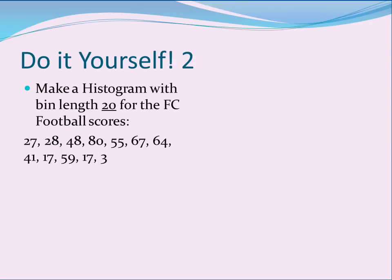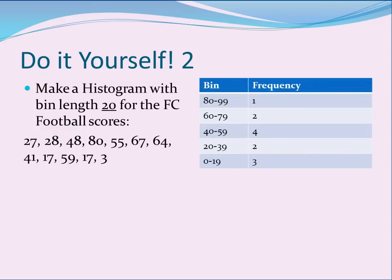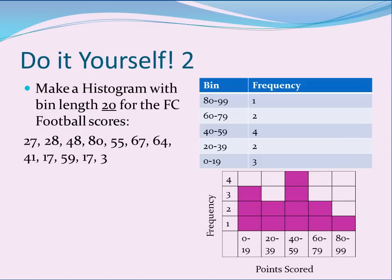Time to try another one on your own. Be careful this time — the bin length of 20 means that this will look a little bit different than your stem and leaf plot. Go ahead and see what you can do with this question. Pause the video now and restart it when you're ready to continue. Ready to see the results? The first thing you should have done was make a frequency table. Since we wanted a bin length of 20, and since football teams can score as few as zero points, your frequency table should look something like this. From here, it's just a matter of drawing the histogram, and if yours looks anything like this, you're on the right track.